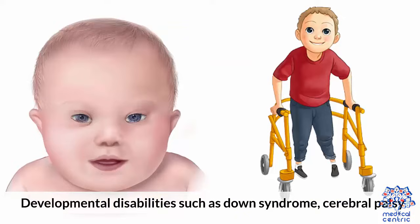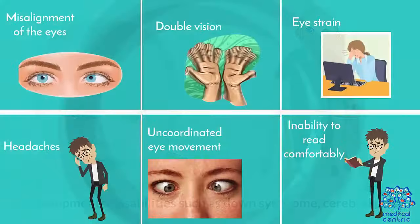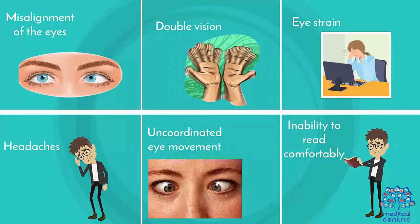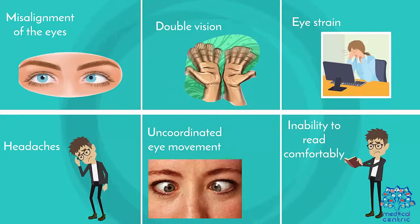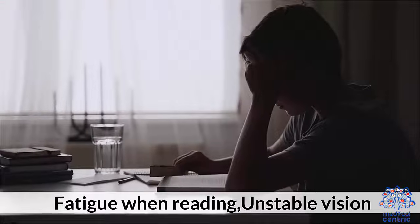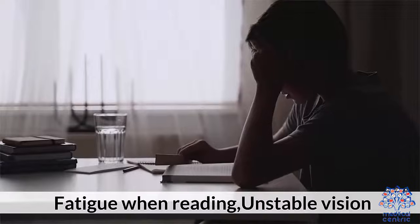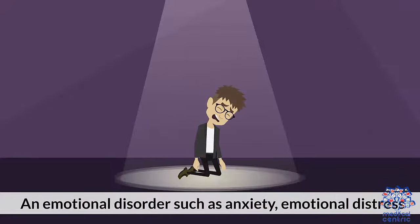Factors associated with an increased risk of strabismus include premature birth, a family history of strabismus, and developmental disabilities such as Down syndrome or cerebral palsy. Symptoms include misalignment of the eyes, double vision, eye strain, headaches, uncoordinated eye movement, inability to read comfortably, fatigue when reading, unstable vision, and emotional disorders such as anxiety or emotional stress.